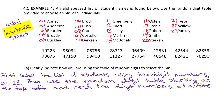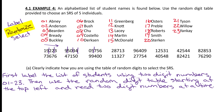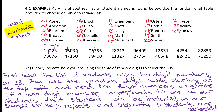One way you can show this to the graders is to partition these numbers every two digits. You can see we're just reading like you'd read a book, left to right, looking at two digits at a time. To complete the explanation, we say: if a two-digit number corresponds to one of our students, that student will be included in our sample. We skip repeats and stop after five students are selected.